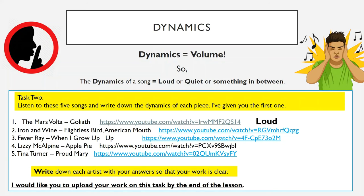So for task two, I would like you to listen to five songs and write down the dynamics of each piece. I've given you the first one — a song called Goliath by The Mars Volta — and the dynamics I put is loud. You've got four other songs to listen to and think about what dynamics you'd give them. I've put the URLs for each song so you can paste them into your browser. Please make sure you also write down each artist clearly, so it's very clear that you fully understand what you're doing.